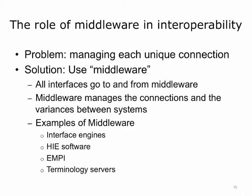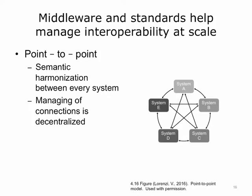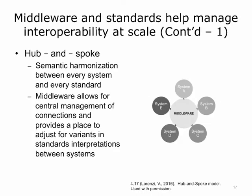Middleware helps patient records across disparate systems. Middleware, in conjunction with standards, is what helps us manage interoperability at scale. In a point-to-point model, in addition to needing semantic harmonization between every system, the managing of connections is very decentralized as well. When all of these different systems need to be connected, you need to have every system understand a lot about interoperability and there is no central management system. With middleware, the connections are more centrally managed in more of a hub-and-spoke type model. It allows for central management of connections and provides a place to adjust for variance in standard interpretations between systems. Of crucial importance is that the data is flowing at all times so that the right information is available at the right place at the right time.